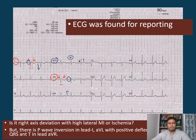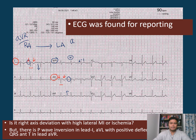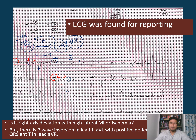If we think about the orientation of the leads: lead I runs from the right arm to the left arm. Lead AVR is from the right arm electrode, and lead AVL is from the left arm electrode. Lead I has become inverted, so the right arm lead must have changed place. Lead AVL is inverted, meaning the left arm lead must also have changed its position — so this is probably a limb lead reversal, specifically a right arm and left arm lead reversal.